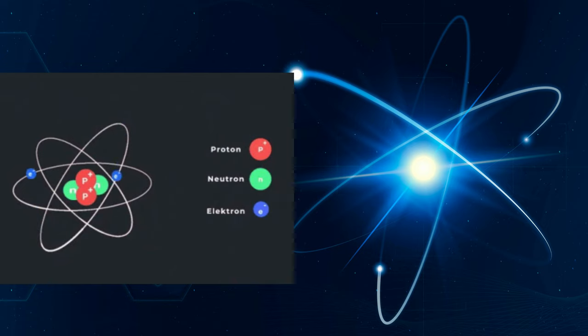Protons and neutrons are found in the nucleus of the atom, while electrons orbit the nucleus.